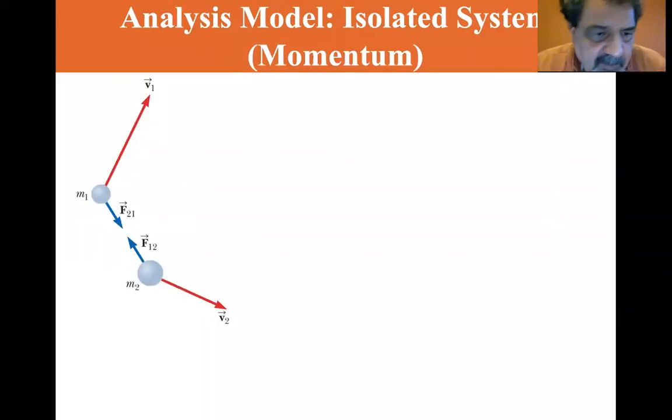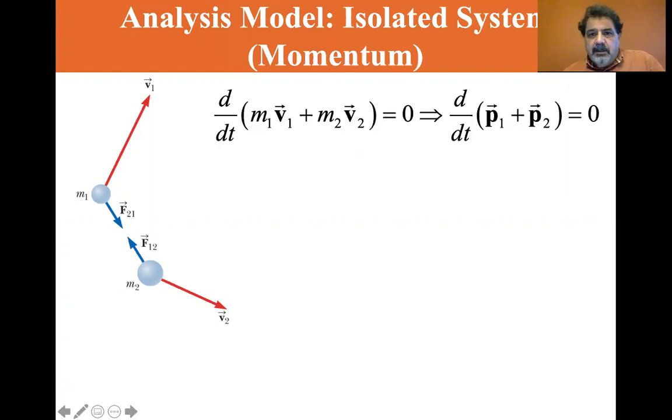We've seen this before - force 21 plus force 12 is equal to zero, and so we see that the time rate of change of m1v1 plus m2v2 is equal to zero. So the time rate of change of the sum of the momenta is equal to zero.